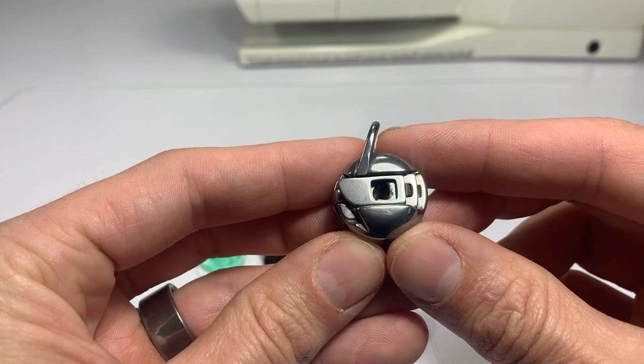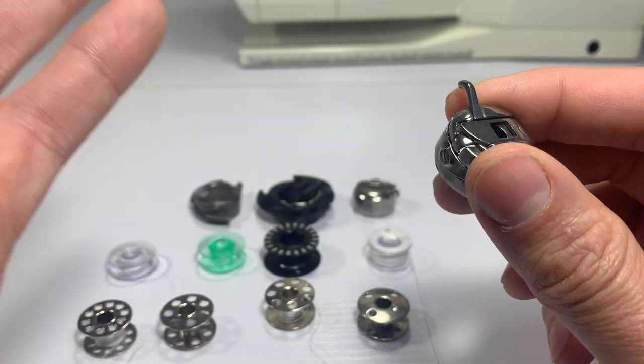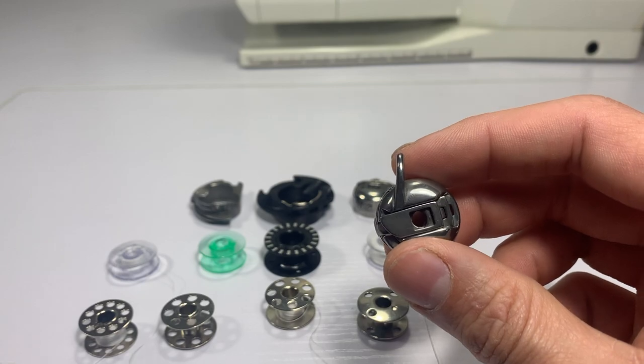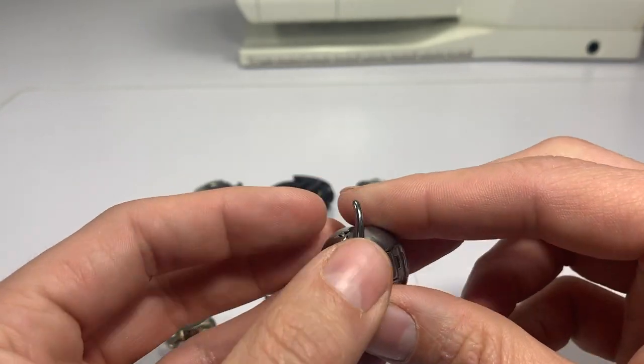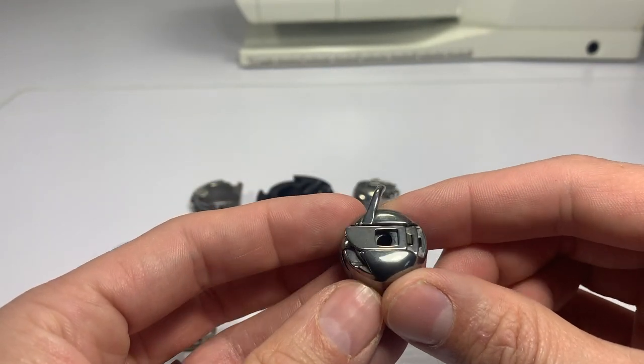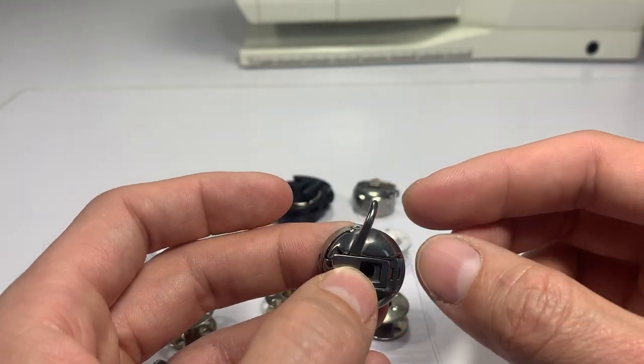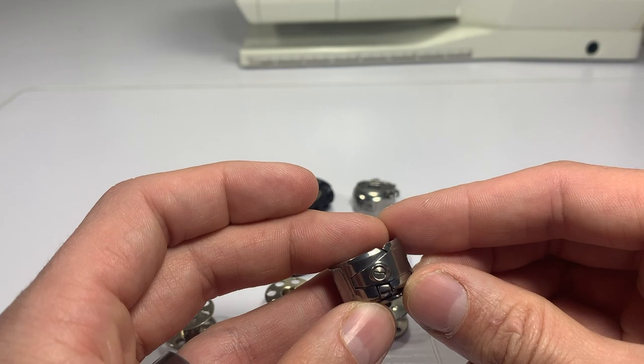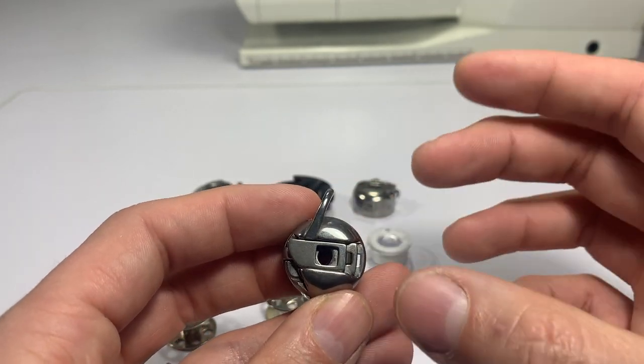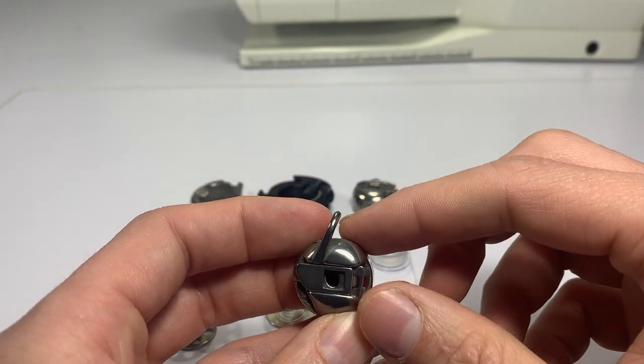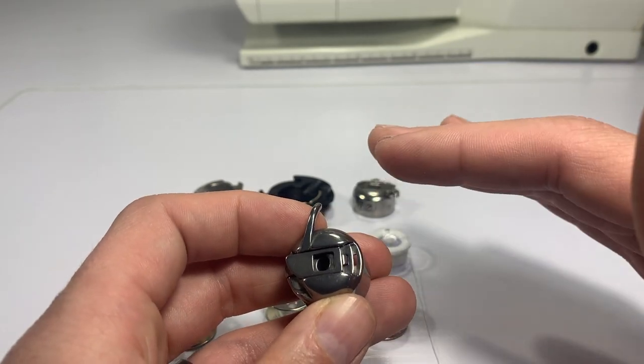I would also give the tip to have an extra bobbin case on hand if you can afford it. If you're doing any type of embroidery or embroidery stitches, you can take one of the bobbins specifically, mark it with modeling paint or nail polish, and roll that tension up slightly. We would do that because when we're doing embroidery, we want the top threads to pull down, where normally we want the two tensions or two threads balanced.